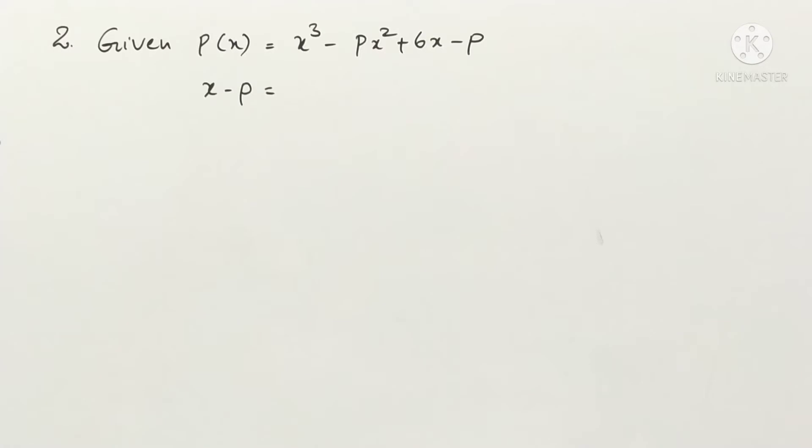Hello students, welcome to my channel. In this video we are going to see problem 2 from Exercise 2.3. Find the remainder when x³ - px² + 6x - p is divided by x - p.